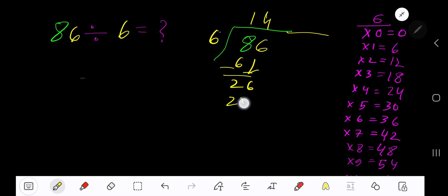4 times 6 is 24. Subtract to get 2. So our answer is 14 remainder 2.